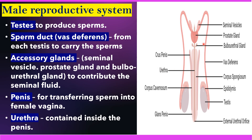The sperm duct or vas deferens carries sperms from each testis. There are three main accessory glands: seminal vesicle, prostate gland, and bulbourethral gland. The next organ is the penis, which is used for transferring sperm into the female vagina. Another organ is the urethra, which is contained inside the penis. These are the different organs present in the male reproductive system.